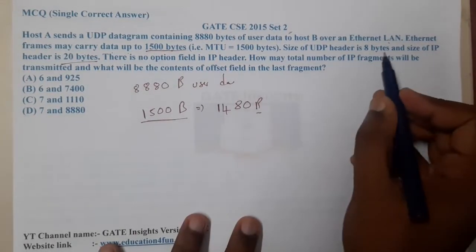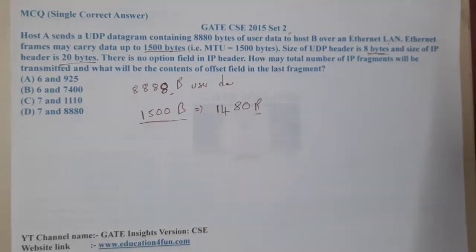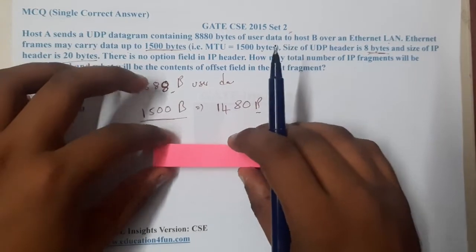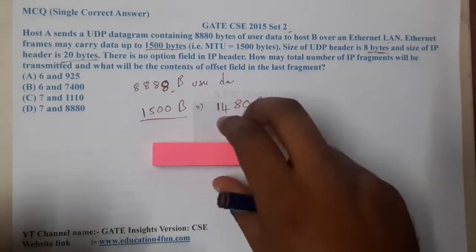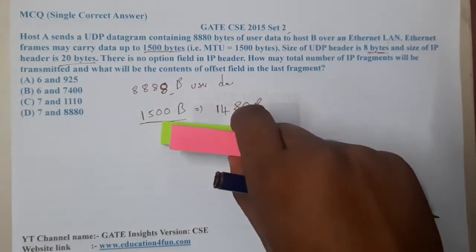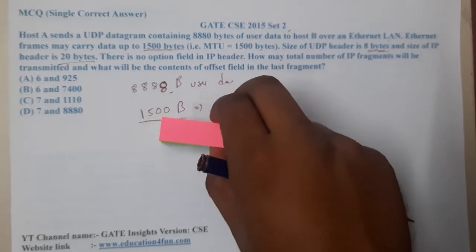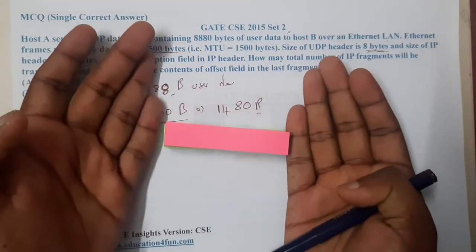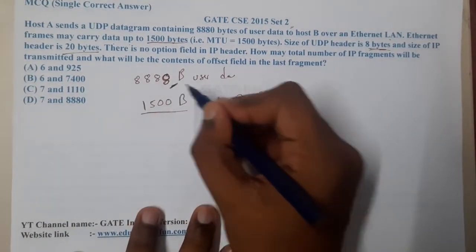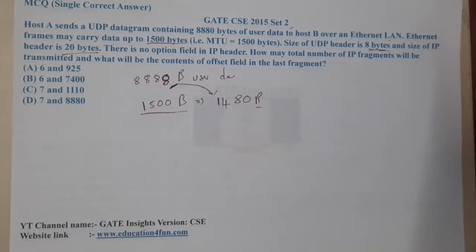Because the UDP header plus the entire UDP data is placed inside the IP datagram, the IP layer sees the UDP header as part of the data payload. So the total data to be fragmented is 8880 + 8 = 8888 bytes. Each fragment can carry 1480 bytes of data, since the 20-byte IP header occupies the rest of the 1500-byte frame.